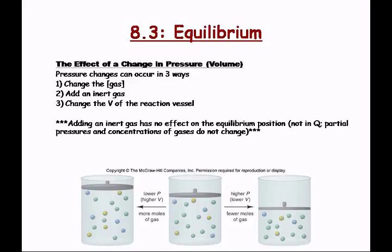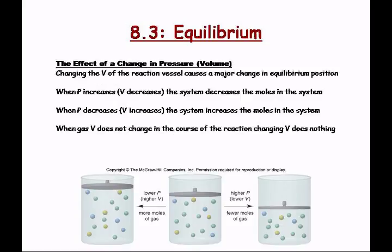Pressure changes can occur in three ways: you can change the concentration of the gas, add an inert gas, or change the volume of the reaction vessel. We're going to focus on changing the volume and changing the concentration of the gas. Changing the volume will, in turn, change the pressure of the reaction vessel, and this causes a major change in the equilibrium position.